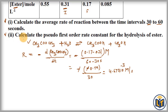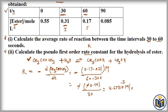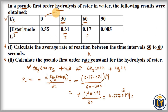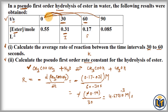In the second part, the question says: calculate the pseudo first order rate constant for the hydrolysis of esters — that is, we have to calculate the k value. First we calculate the rate constant at different time intervals: 0 to 30, 0 to 60, and 0 to 90. At these time intervals we get three different rate constant values, then we calculate the average. We add those three rate constant values and divide by three to get the pseudo first order rate constant.